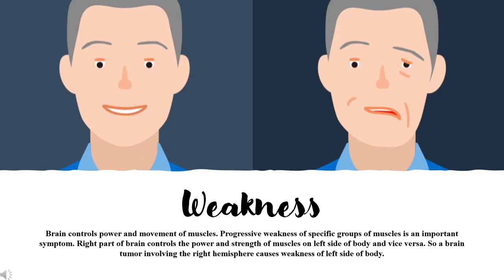Weakness. The brain controls the power and movement of muscles. Progressive weakness of specific groups of muscles is an important symptom. The right part of the brain controls the power and strength of muscles on the left side of the body and vice versa, so a brain tumor involving the right hemisphere causes weakness of the left side of the body.